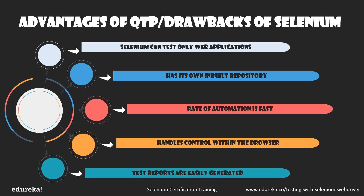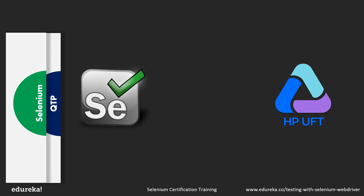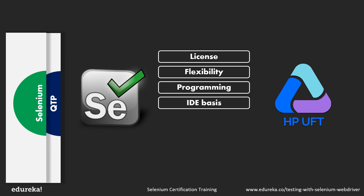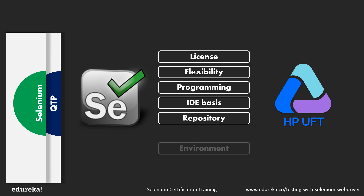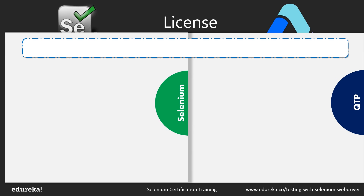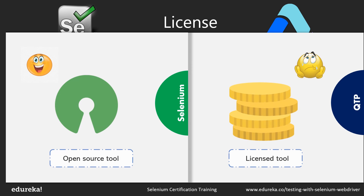Now let's look at the ultimate face-off between these tools. We'll first compare them based on cost — whether the tools are licensed or free. Selenium is an open source tool and users do not have to pay for any version. Whereas QTP is licensed and the user has to pay to get the software. Next, we'll compare them based on flexibility, programming language, IDE basis, repository functionality, and environment support.